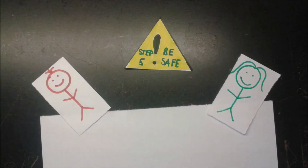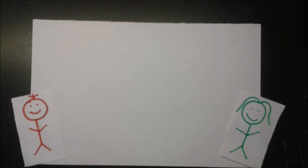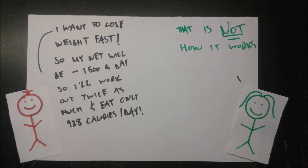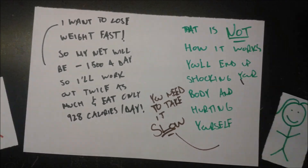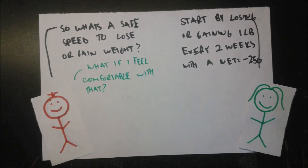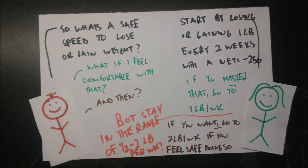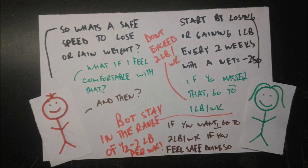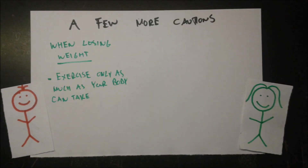Step five: be safe. Just because a net of negative 500 a day loses one pound a week doesn't mean negative 1,500 is a good idea — that shocks your body and can hurt you. Take it slow. If you're new to calorie counting or increased exercise, start by losing or gaining one pound every two weeks. When comfortable, move to one pound a week, and at most two pounds a week. Do not exceed two pounds a week — going above that is considered unsafe.